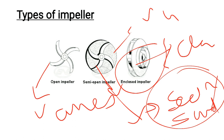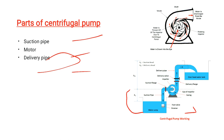The delivery pipe is the last major part of the centrifugal pump. Its main function is to discharge water from the outlet to the desired location, and it also protects the pump from water hammer effects. The size of the delivery pipe depends on the height of the water source. The foot valve retains water in the suction line, and the strainer at the bottom prevents debris and foreign material from entering the pump.